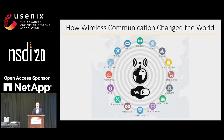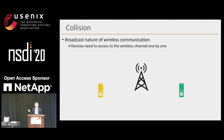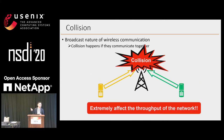Now Wi-Fi has become the most popular way for us to connect to the internet, and it has covered anywhere in our daily life. But because of the broadcast nature of the wireless channel, collision is still a problem. So devices have to access the wireless channel one by one, and if they transmit together, collision will happen, which will extremely affect the network throughput.